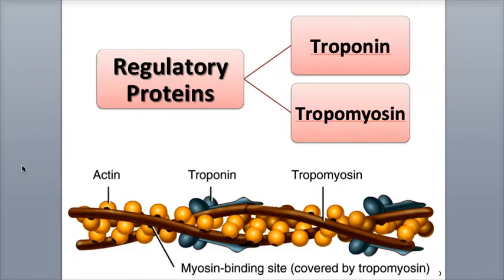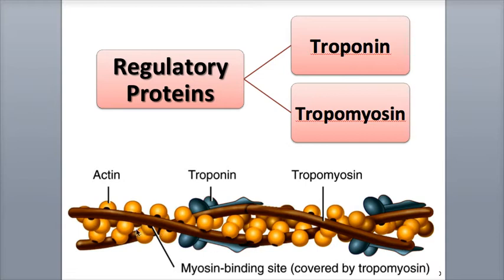The two regulatory proteins are also associated with the thin filament. Tropomyosin is the long, thread-like regulatory protein, shown in brown, that coils around the actin molecules. When muscle is relaxed, tropomyosin covers the myosin binding sites on the actin, as shown here in the illustration. This prevents muscle contraction from occurring — there is nowhere for the myosin heads to connect to the actin.